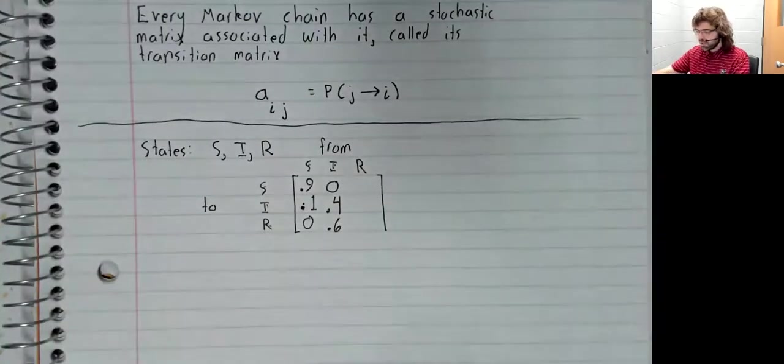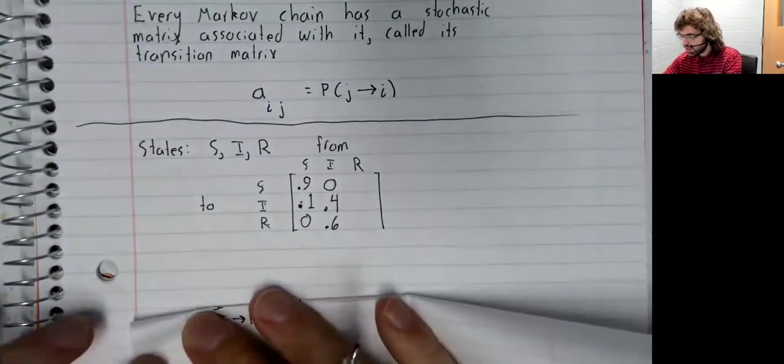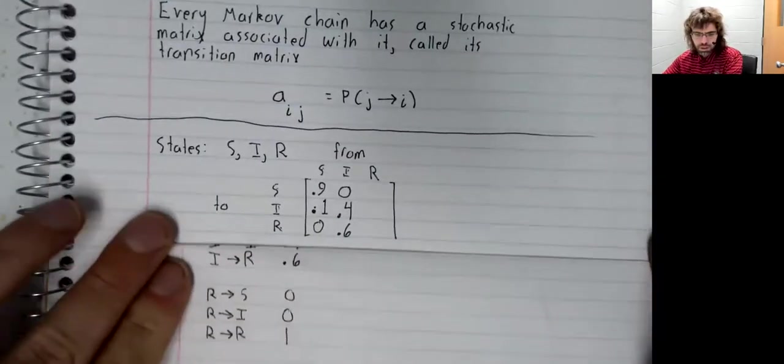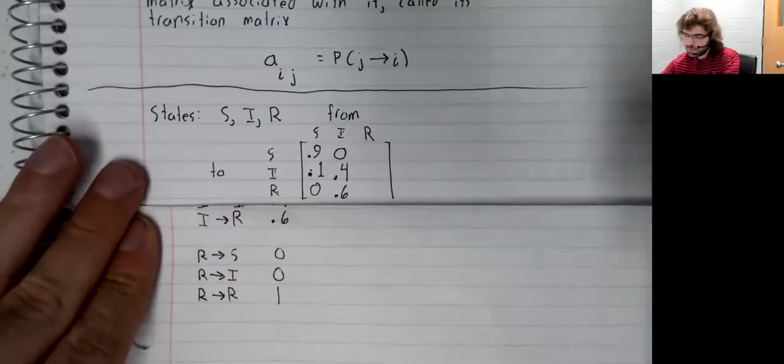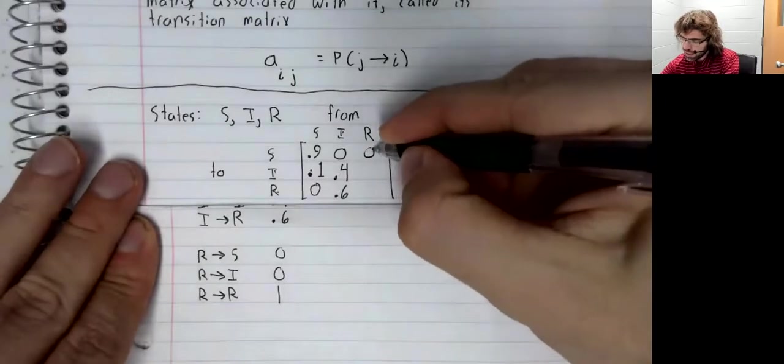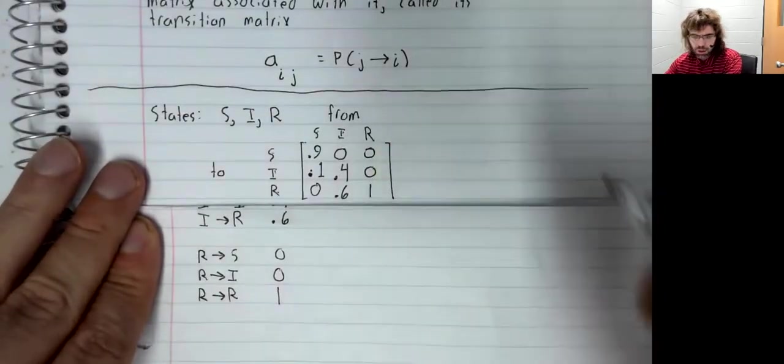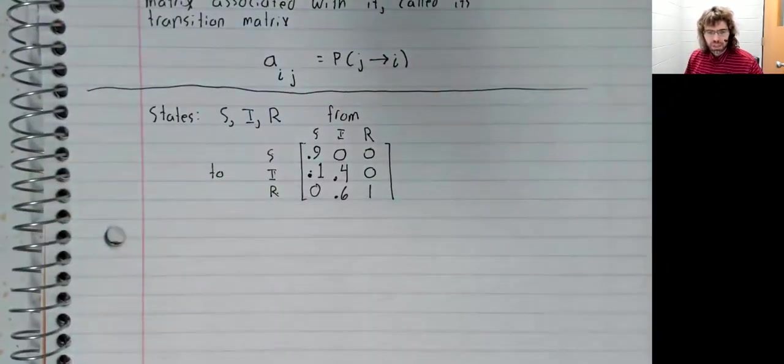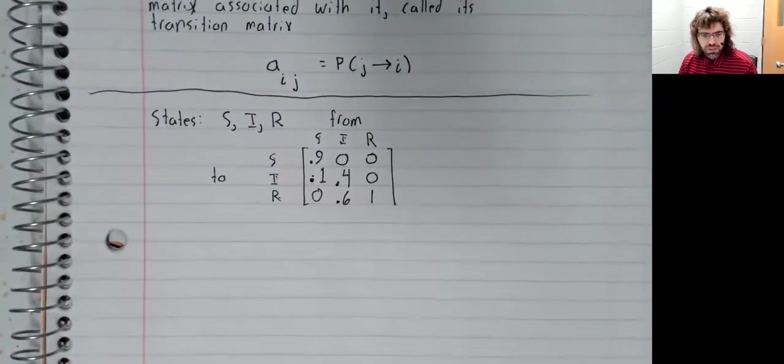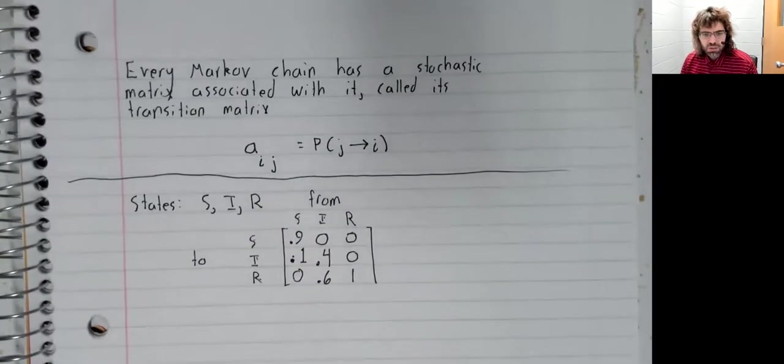And similarly for the last column, R to S, R to I, R to R. And this is a stochastic matrix.